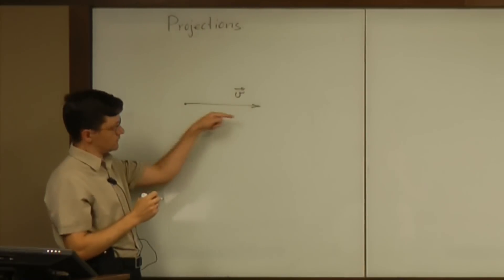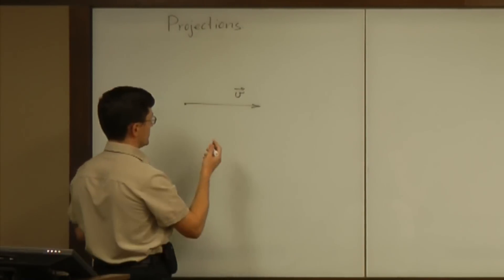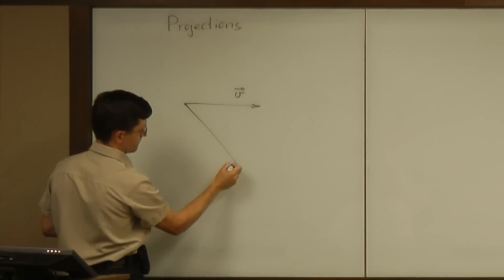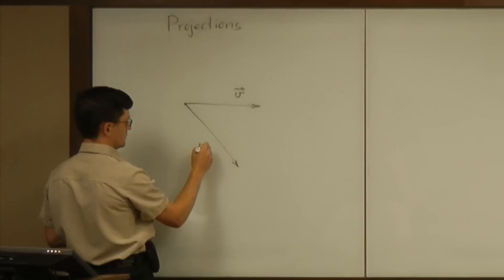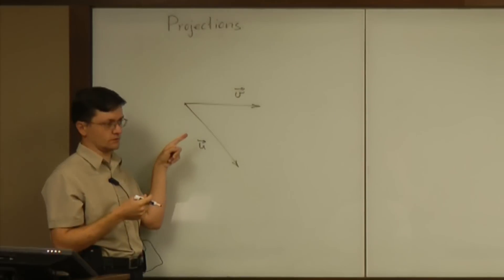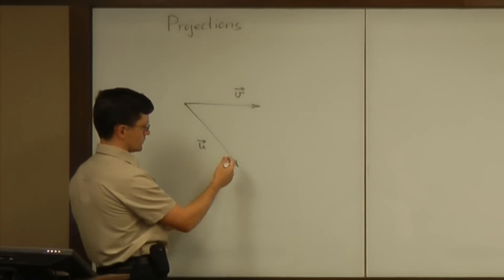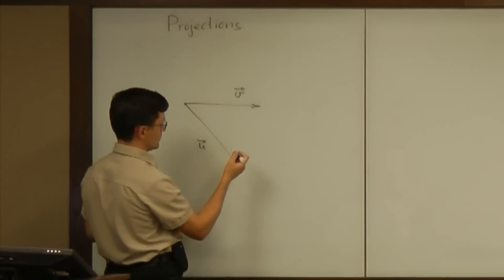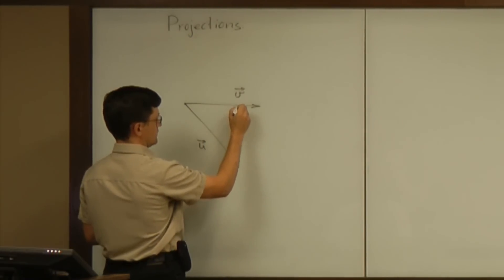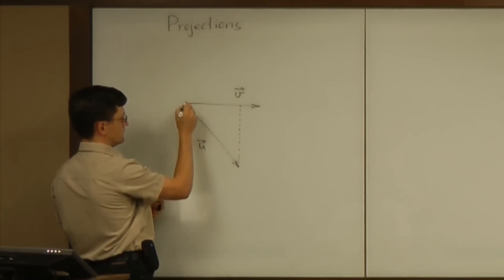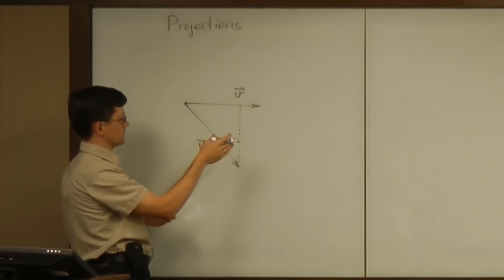One vector describes the possible direction. And the other vector, let's call it U, can be thought of as a force applied to the object. And then that force results in motion. And what we want to measure is a part of the force that acts on the object, moving it in the direction we want.